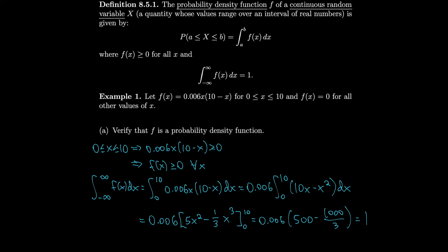For example, going back to the stopwatch example — if I wanted the probability that the watch is stopped from 0 to 60 seconds, and the stopwatch only goes from 0 to 60 seconds, then integrating from 0 to 60 of the probability density function should equal 1. And if stopping anywhere from 0 to 60 is equally likely, I'd expect the probability from 30 to 60 to equal one half.